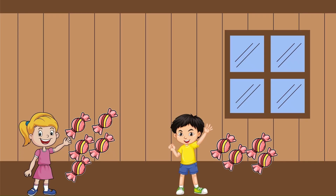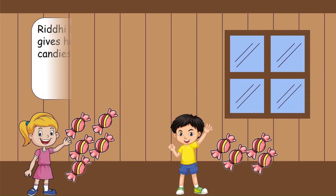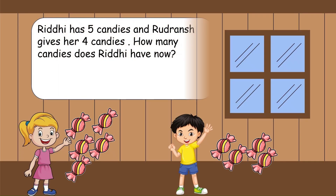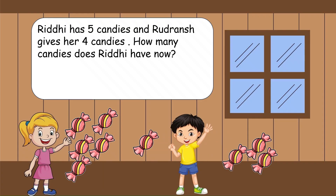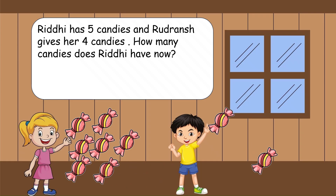Riddhi has 5 candies and Rudhrans gives her 4 candies. How many candies does Riddhi have now? Riddhi ke paas 5 candies thay. Rudhrans ne ushe 4 candies de diya. Now tell us, how many candies are there?